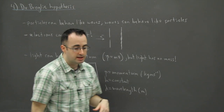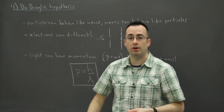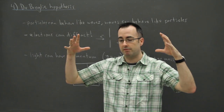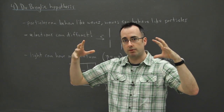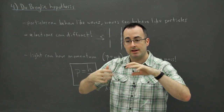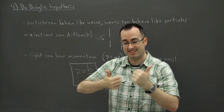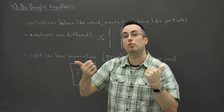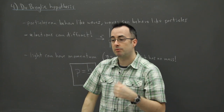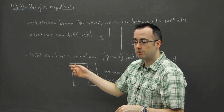That means light can actually push things — what we call radiation pressure. This explains how a star can be in hydrostatic equilibrium: the force of gravity crushing the star is being held back by the light of the star itself. The light going outward has a radiation pressure, and pressure is related to momentum.